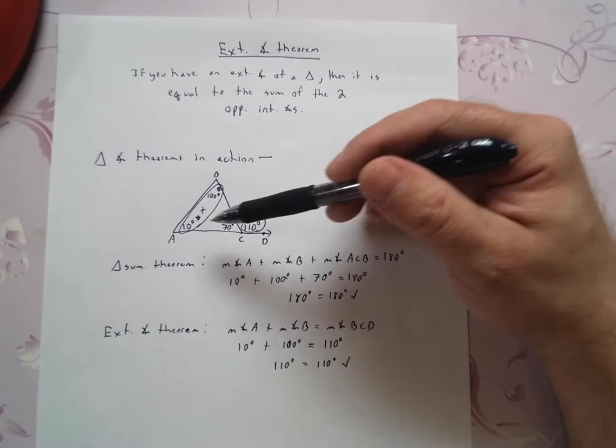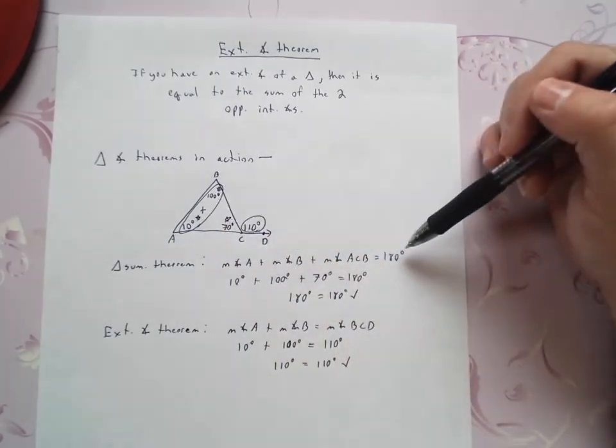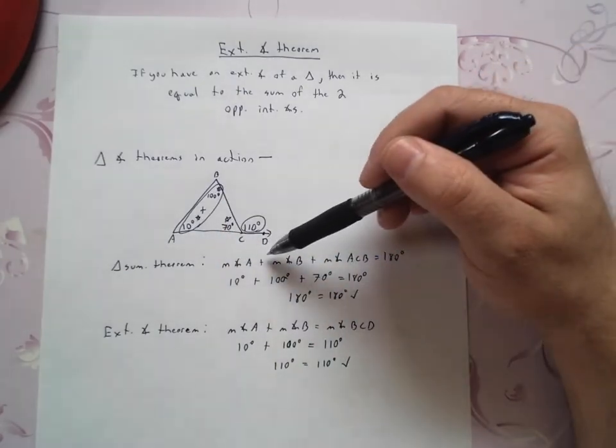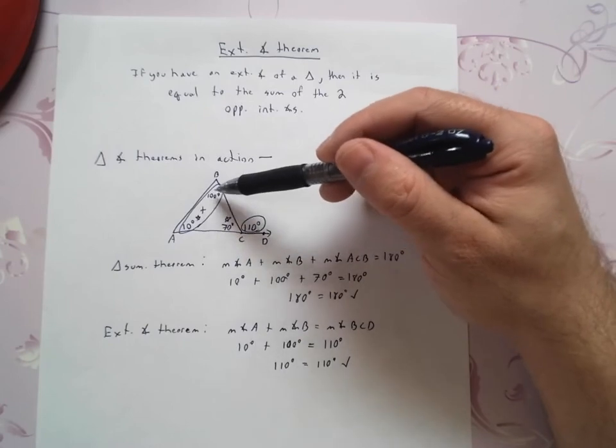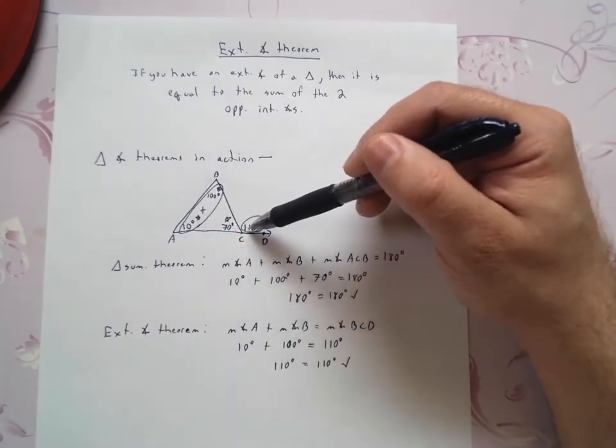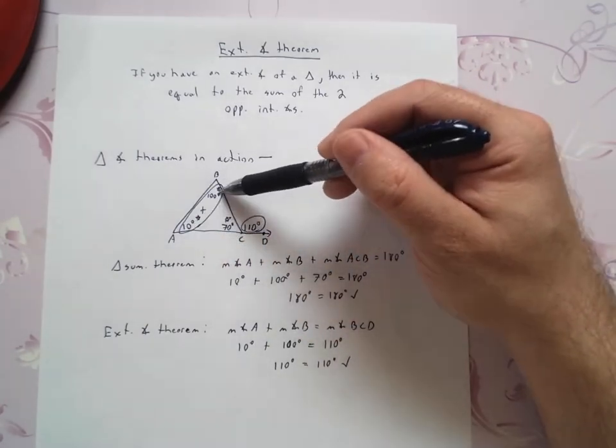It checks out. So triangle sum theorem, add up all the angles inside, equals 180 degrees. Exterior angle theorem, add up the two angles that are opposite it, not adjacent. These are adjacent. Add the angles that are opposite.